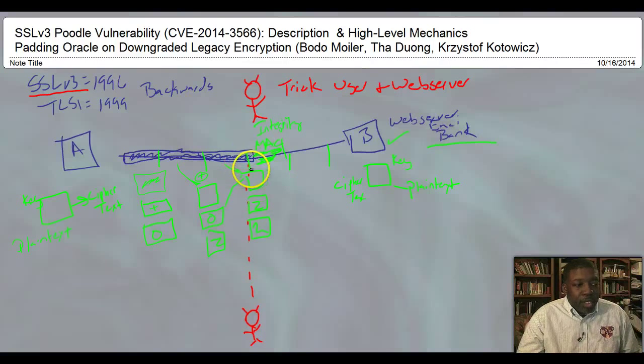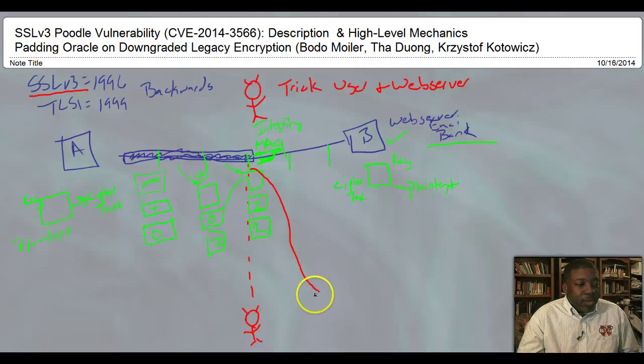So this attacker sees all of this information, so it takes your data. So this bad guy is going to take your data, so all of this, so he has it. That's the squiggly line. Remember the squiggly line? This is what he gets. He doesn't have the original data. He has all of these different encrypted packets.